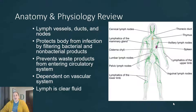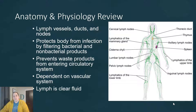It does this by having some special tissue that we call reticular tissue that's found in the lymph nodes. The lymph nodes are able to filter, trap, and then destroy these foreign invaders. It also prevents waste products from entering back into the circulatory system. Now this particular system is very dependent on the vascular system — that part of the cardiovascular system which is the vessels.